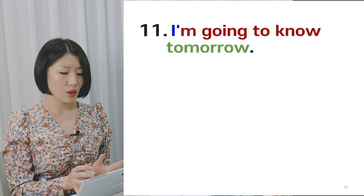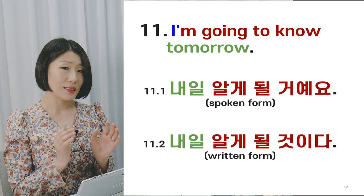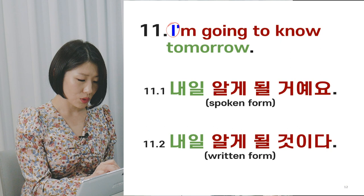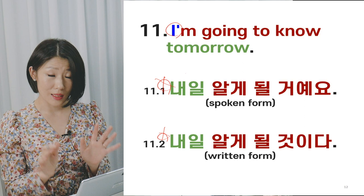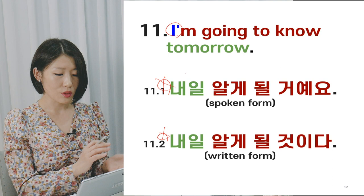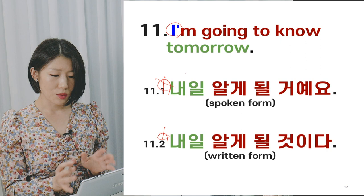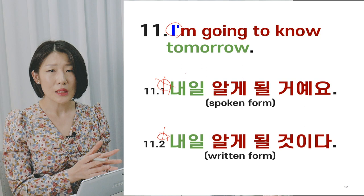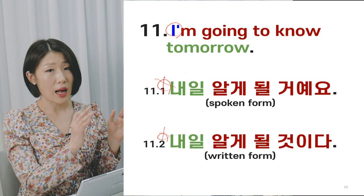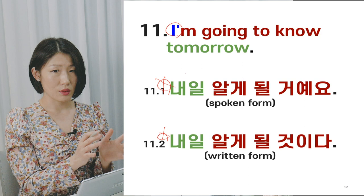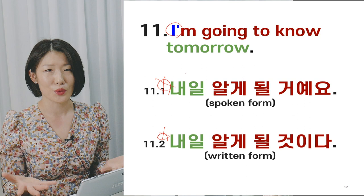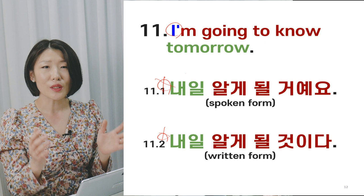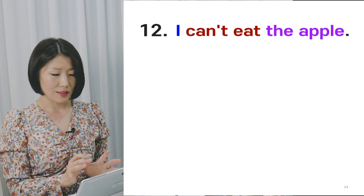Sentence 11: 'I'm going to know tomorrow.' Spoken: 내일 알게 될 거에요. Written: 내일 알게 될 것이다. Notice there is no subject here — it feels more natural to omit the subject in Korean when it is clear from context. Referring to the subject explicitly seems unnatural and awkward, regardless of whether it's conversation or written style. In real conversation, we normally know who 'I' and 'you' are, so omitting the subject is much more natural.